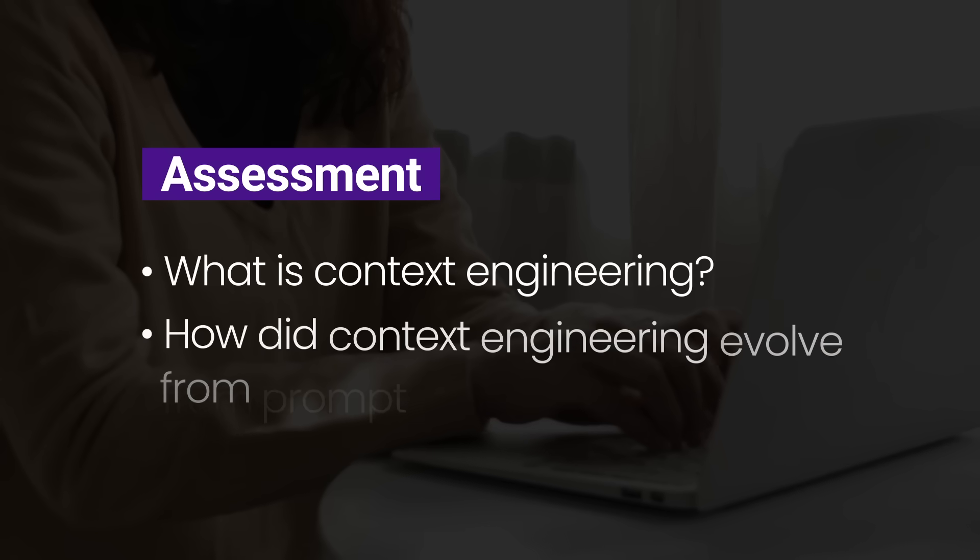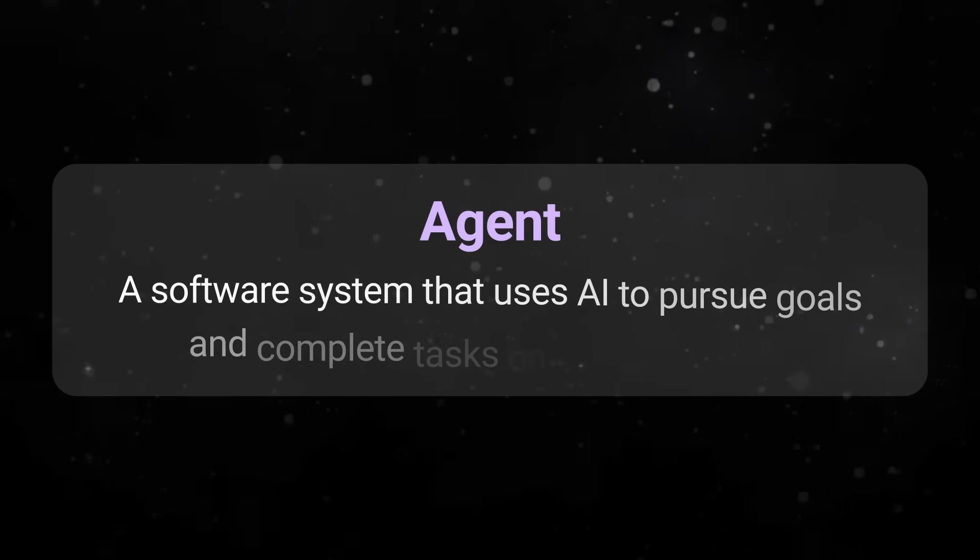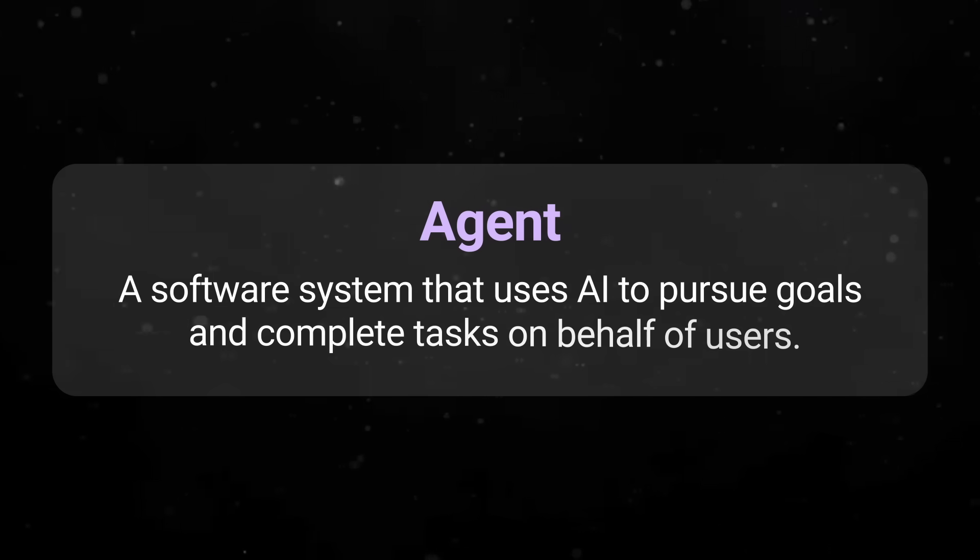I'm going to put on screen now a little assessment — please write your answer in the comments. Let's now dive deeper into what context engineering actually looks like when we're building an AI agent. The definition of an AI agent is a software system that uses AI to pursue goals and complete tasks on behalf of users — for example, a customer service AI agent, a sales assistant AI agent, or a coding agent. There are lots of different types of AI agents, but regardless of type, there are six components which are essential building blocks.